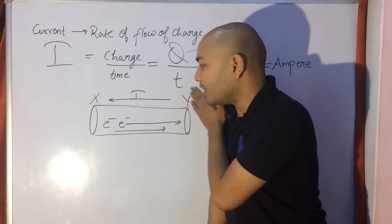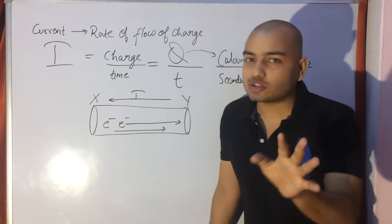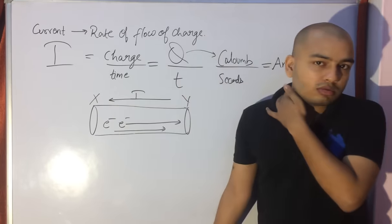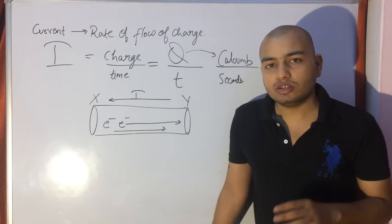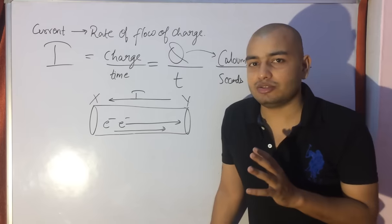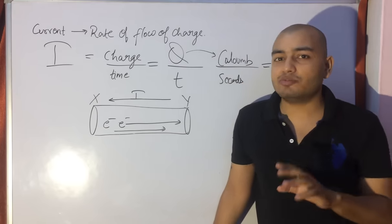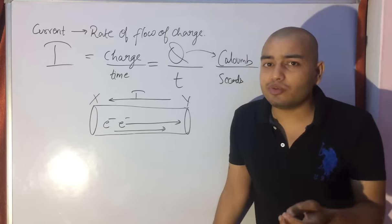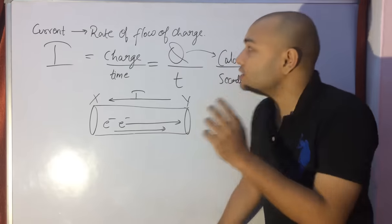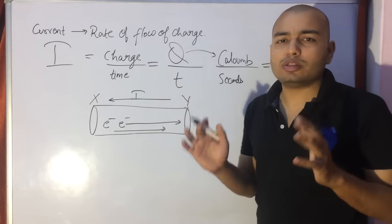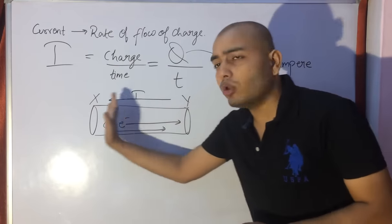Some people say current is the flow of positive charge, and that is why the direction of current is as it is. But that is not entirely true. Current is the flow of charge — you have positive charges and negative charges, and both can flow. Current is not defined on one type of charge alone; it is the total rate of flow of charge. So if electrons go one way, current goes the opposite way.